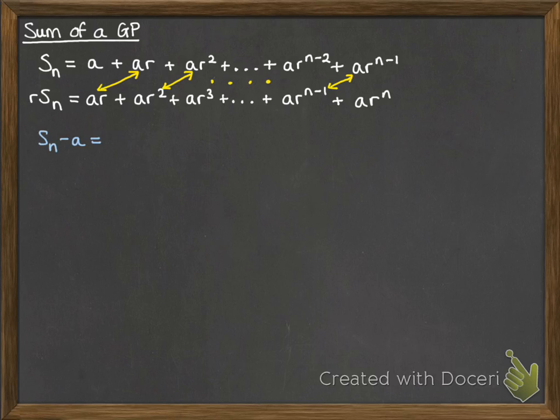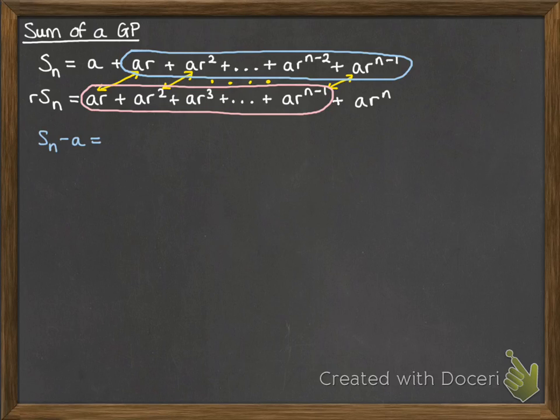So now if we think about that top line there, if we want to describe that bit that matches, we would talk about it as being our Sn without the a, so Sn minus a is that bit that matches. Now on this second line, for r times our sum of the first n terms, this section here, we can talk about it as being the rSn, but without the a to the rn at the end. So those two bits match up, they have to be equal to each other.